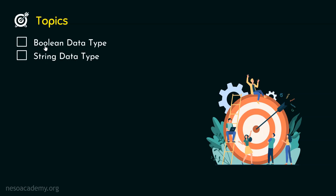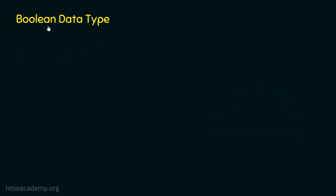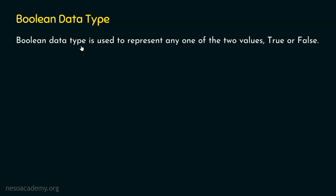Let's first try to understand what is boolean data type. What is the meaning of boolean data type? Boolean data type is used to represent any one of the two values, either true or false. Boolean data type represents two values: either true or false.